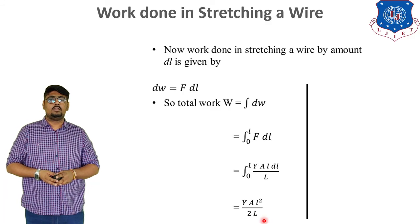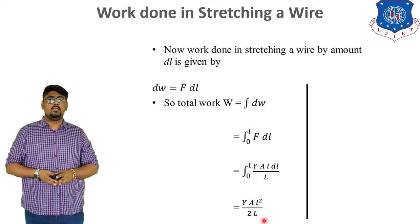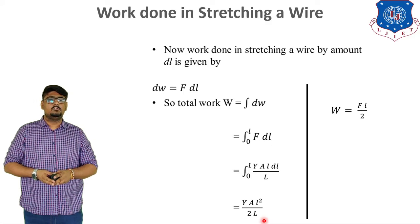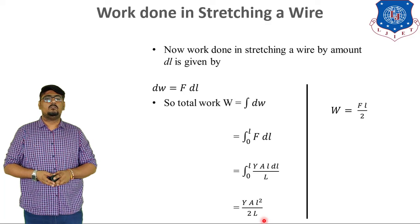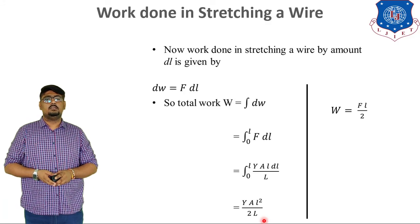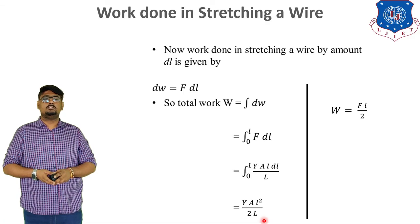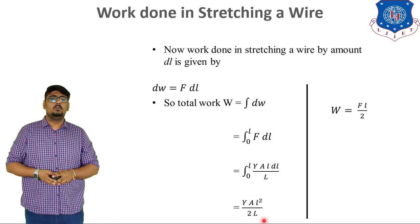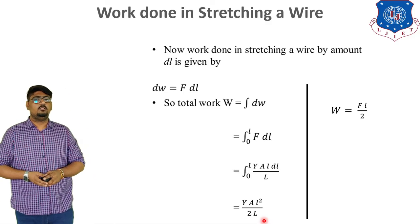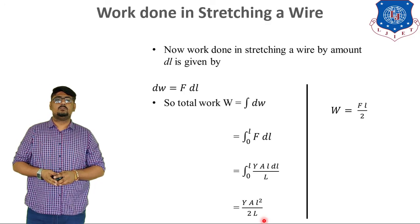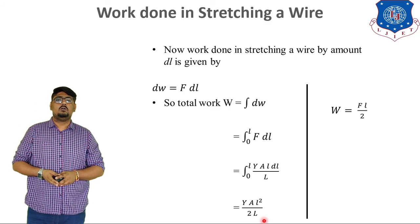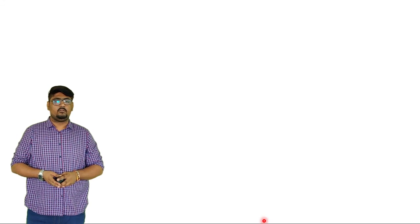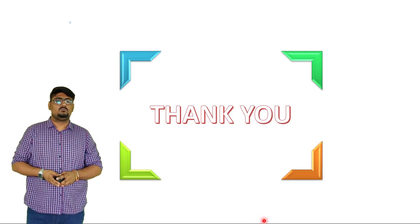Now, we know that the value of force is given by YAl by capital L. So, we get the equation of total work done as W is equal to Fl divided by 2. So, in the next video, we will learn to calculate the twisting torque on the cylinder or the wire shaft for both solid and hollow. That is it for today guys. Thanks for watching.